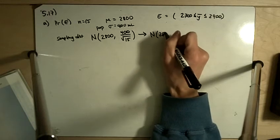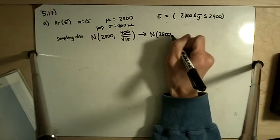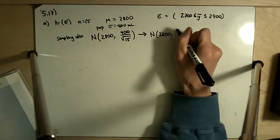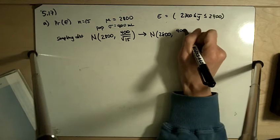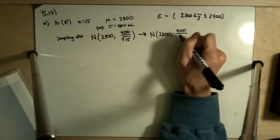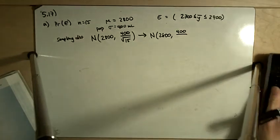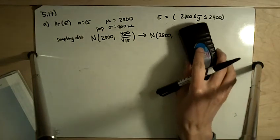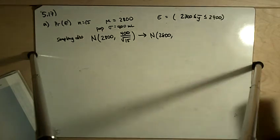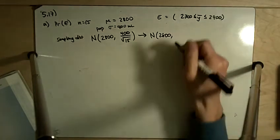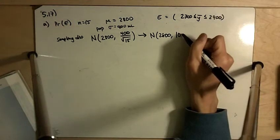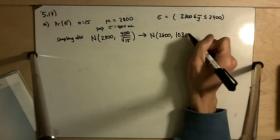400 divided by the square root of 15 equals 103.3.